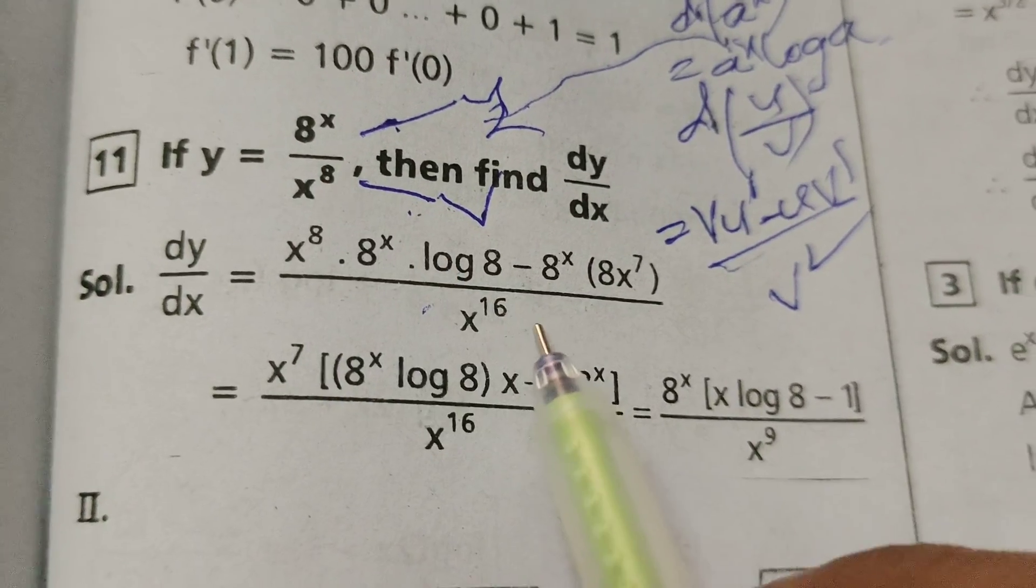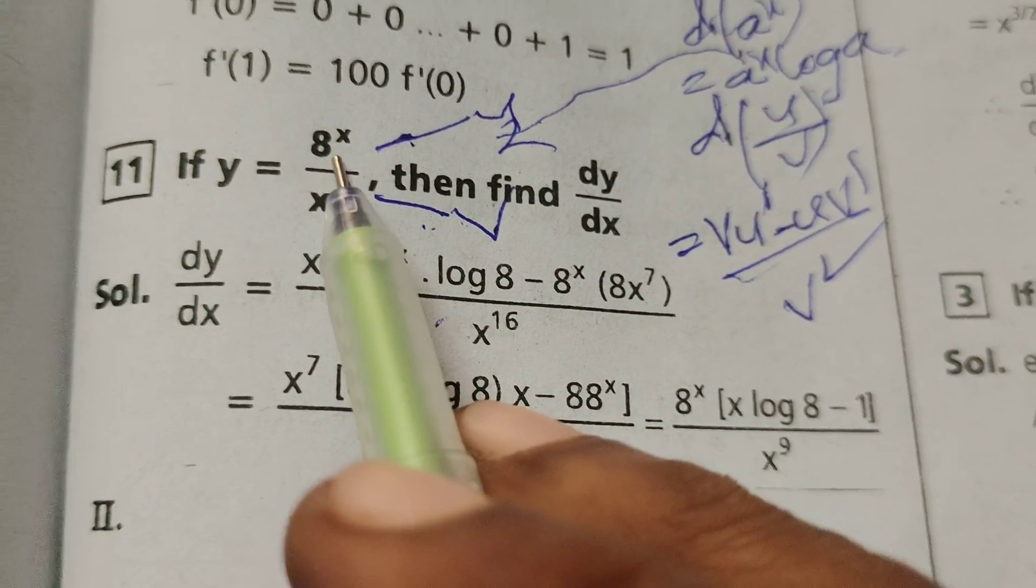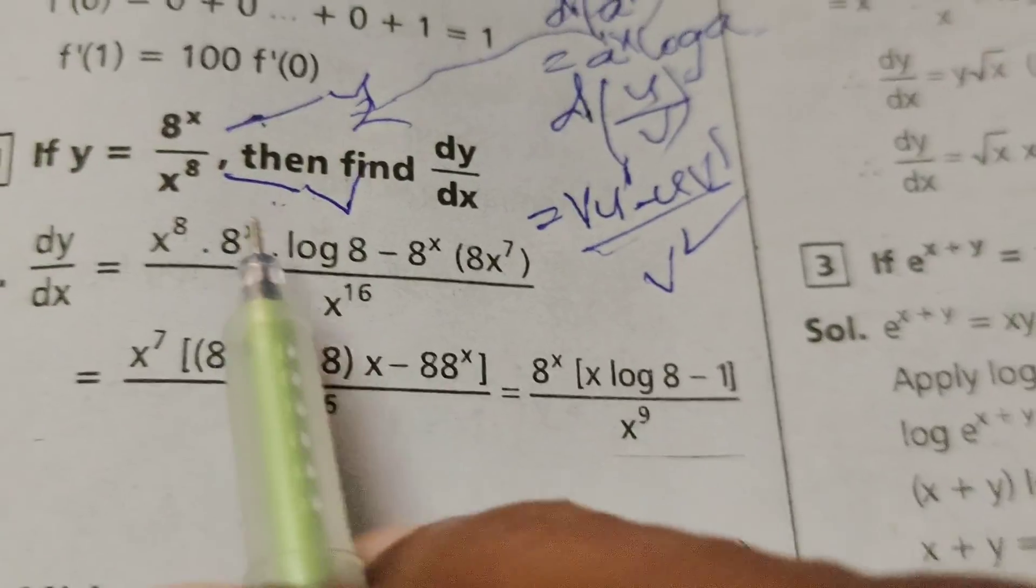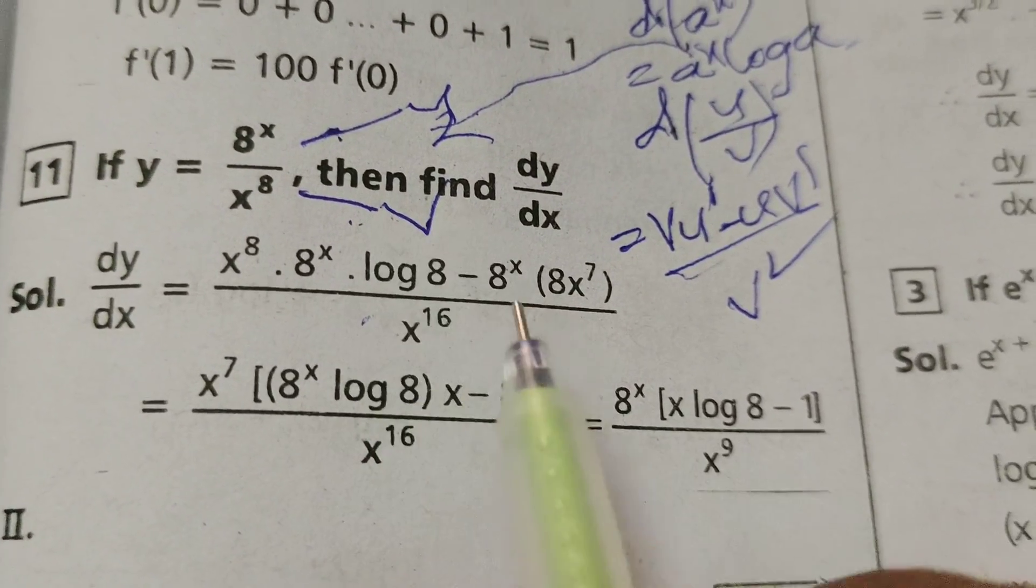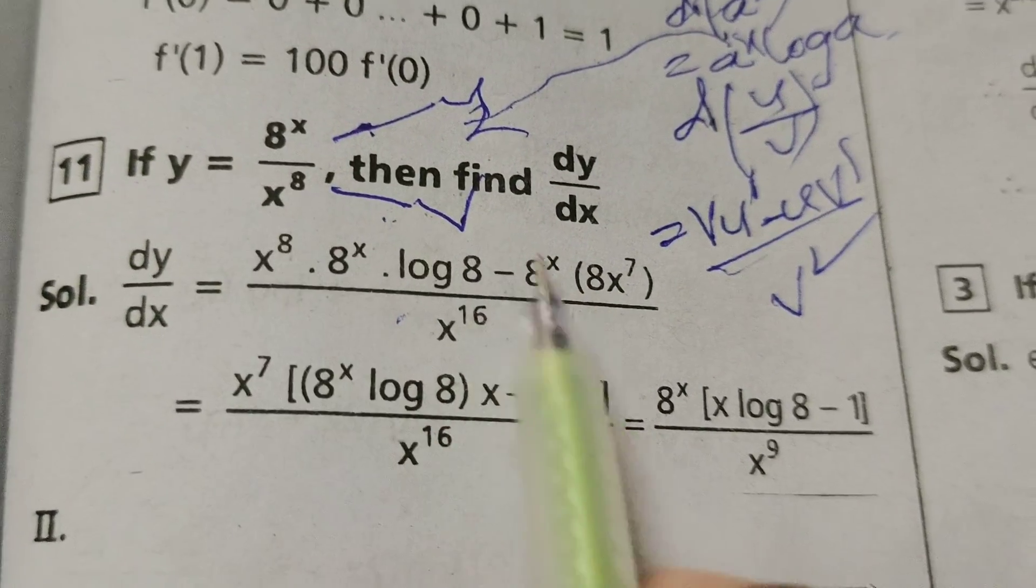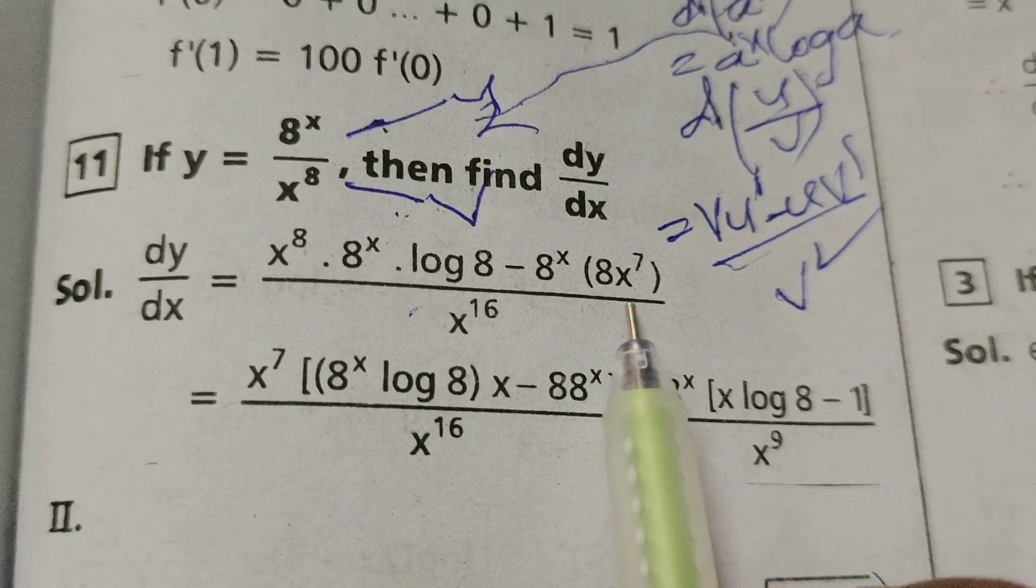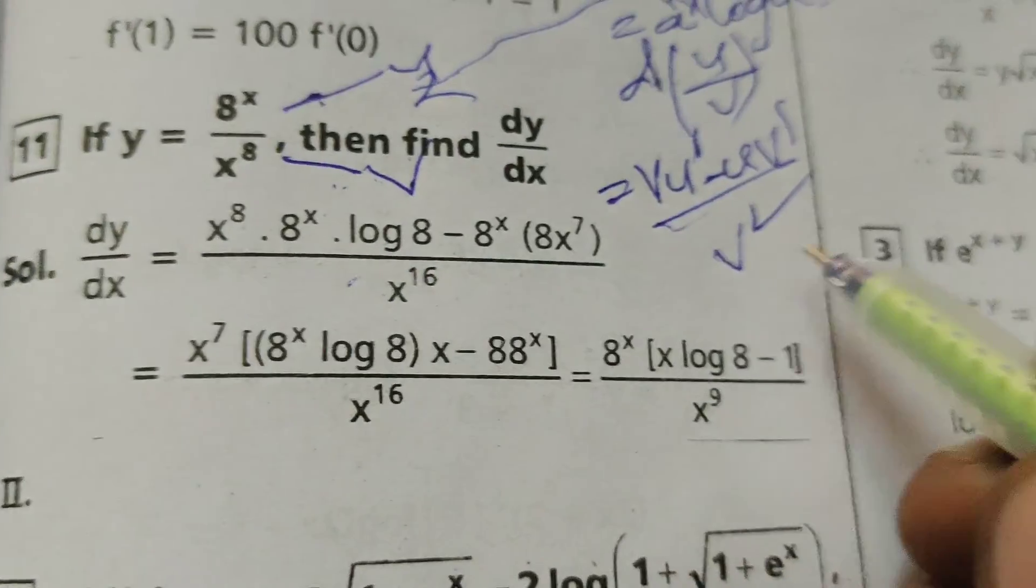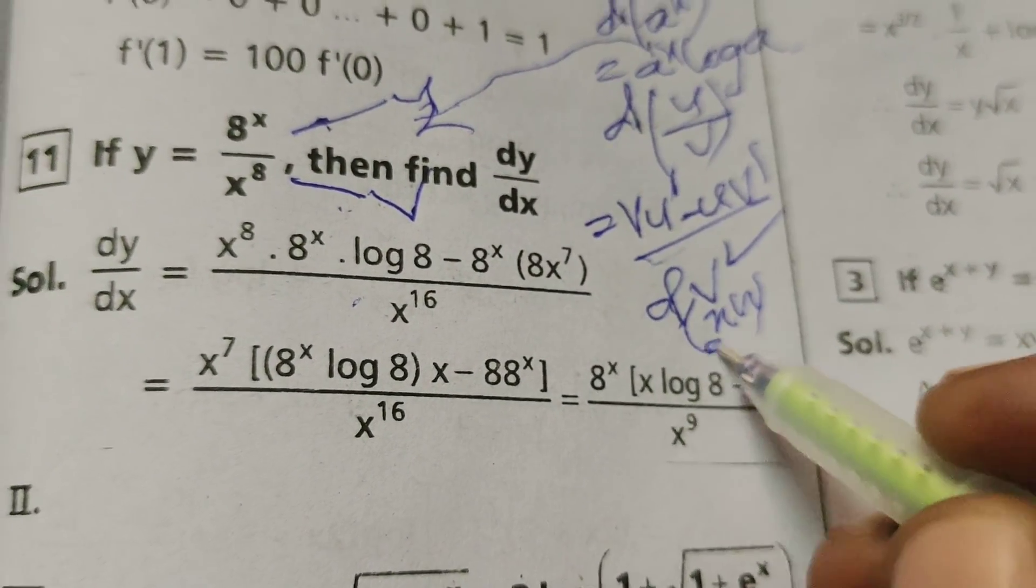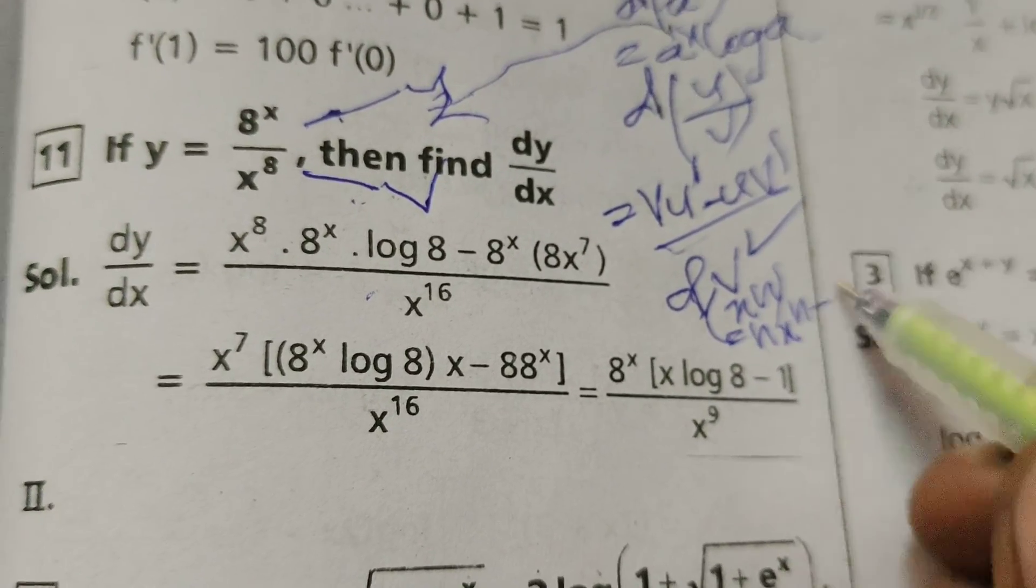next u is the constant. Here u means by the given problem 8 power x, that is constant. Now differentiate v dash, that is v means x power 8. Differentiate x power 8 means 8 into x power 7, using the formula differentiation of x power n, n into x power n minus 1.